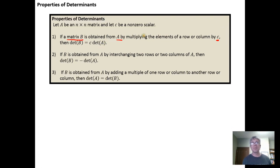So again, this is multiplying a row or column by a scalar, one of the three elementary row operations. So the determinant of B will be C times the determinant of A. If B is obtained from A by interchanging, switching two rows or two columns, then the determinant of B will be the opposite of the determinant of A.